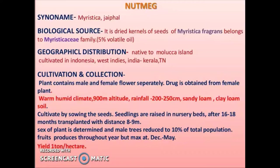Cultivation and collection: the plant contains male and female flowers separately; drug is obtained from the female plant. Warm, humid climate, 900 mm altitude, rainfall 200 to 250 cm, sandy loam soil, clay loam soil. Cultivated by sowing seeds; seedlings are raised in nursery beds after 16 to 18 months, transplanted at a distance of 8 to 9 meters. Male trees are reduced to 10% of the total population. Fruits are produced throughout the year but maximum from December to May. Yield: 1 tonne per hectare.